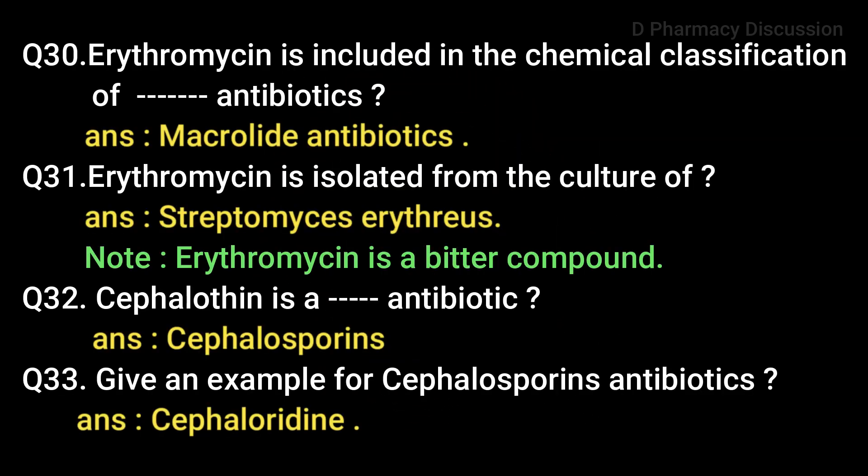Erythromycin is included in the chemical classification of macrolide antibiotics. Erythromycin is isolated from the culture of Streptomyces erythraeus. Erythromycin is a bitter compound and occurs in the form of white or slightly yellow, slightly hygroscopic crystals or powder. Question 32: Cephalothin is a cephalosporin antibiotic. Question 33: Examples of cephalosporin antibiotics are cephaloridine, cephalothin and cephalexin.